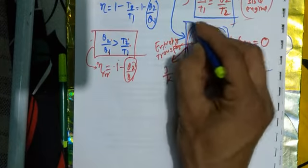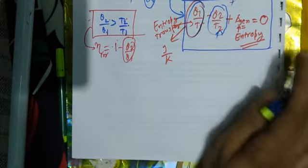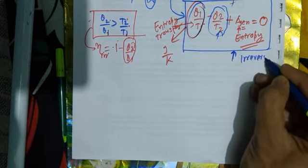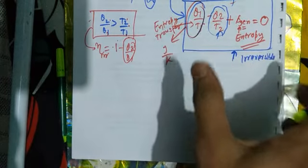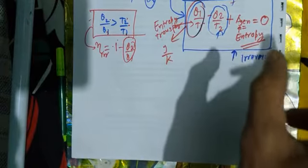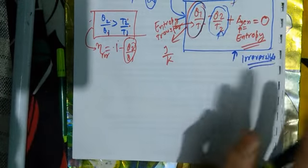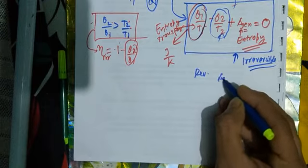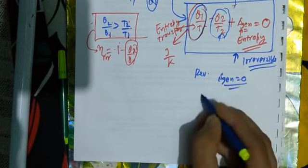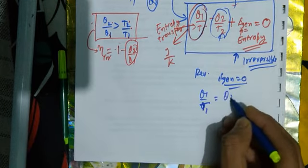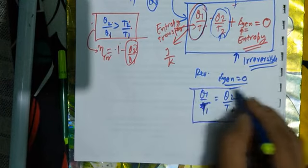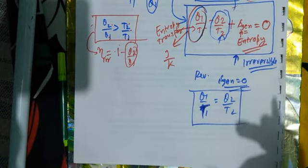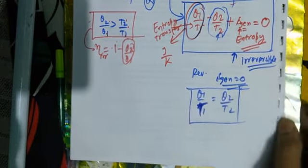The equation Q1/T1 minus Q2/T2 plus S_generation equals 0 is written for the irreversible process. Entropy concept is used in thermodynamics this way. For a reversible process, S_generation equals zero, and Q1/T1 equals Q2/T2. For a reversible process there is no entropy generation within the system — you are only transferring entropy.